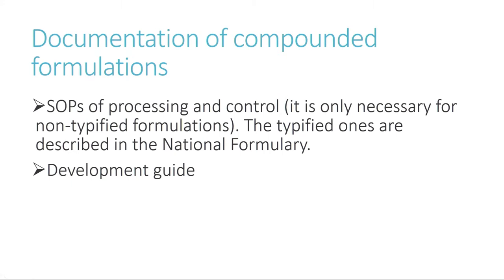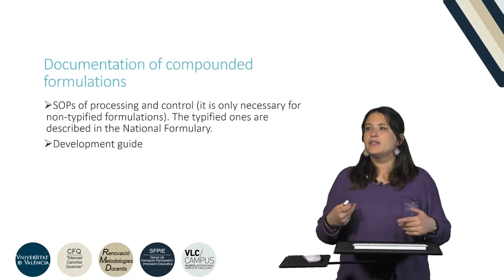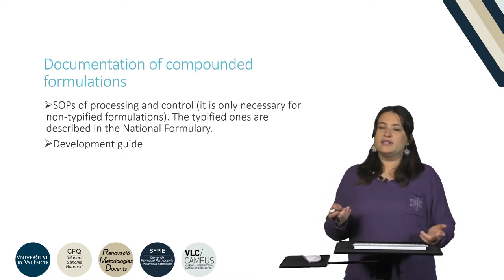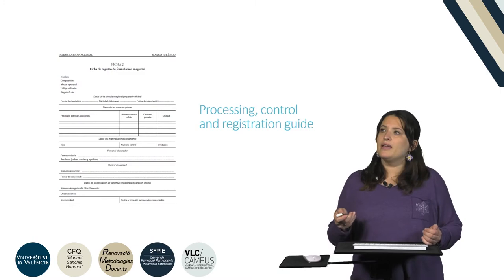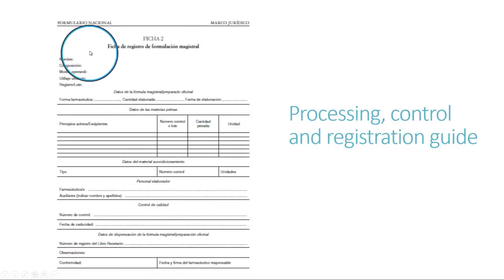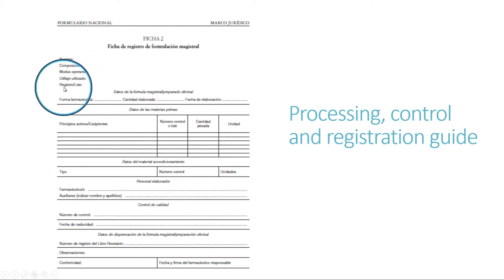Once we have transformed the bulk material into a compounded formulation and packed it, we need to fill in several documents regarding the compounded formulations. These are the SOPs for processing and control. If this formulation is not included in the national formulary — because if it is included, the SOP is written and clarified there — then we have to fill in a development guide. Here we have to write the name, composition, procedure method, materials used, and a register or batch number.